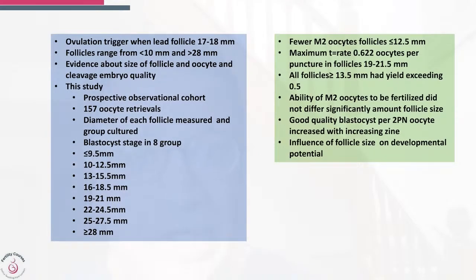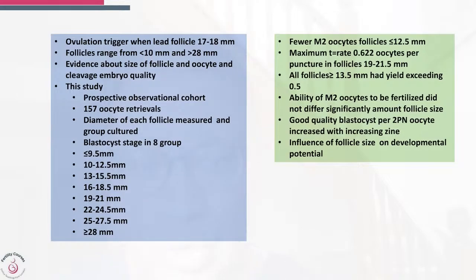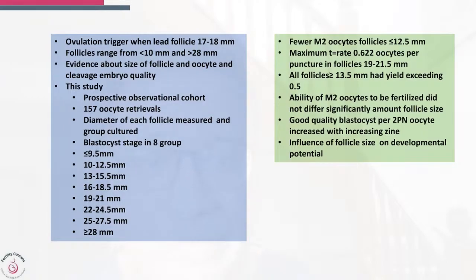Fewer metaphase 2 oocytes were observed in follicles less than 12.5 millimeters, and the best rate of getting mature oocytes was between 19 and 21.5 millimeters. Follicles crossing 13.5 millimeters gave a reasonable rate of getting oocytes. The ability of metaphase 2 oocytes to be fertilized did not differ significantly based on follicle size, once metaphase 2 oocytes were obtained. Good blastocysts per 2PN oocyte increased with increasing follicle diameter.